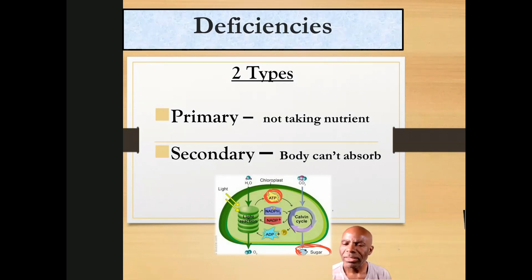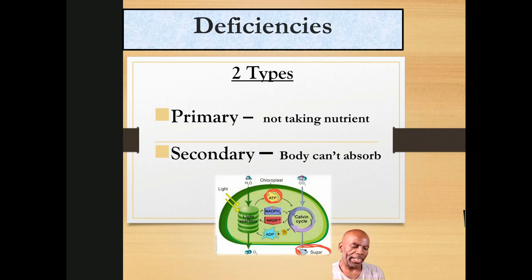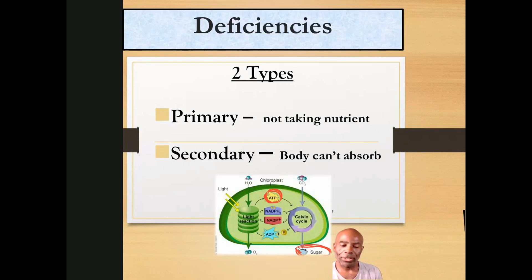Does someone have Proverbs 25:16? Eat so much as is sufficient for you, lest you be filled therewith and vomit. The NLT version puts it simply: if you find honey, eat just enough — too much of it and you will vomit. Too much of anything will make your body ill-fitted. Balance is the key.